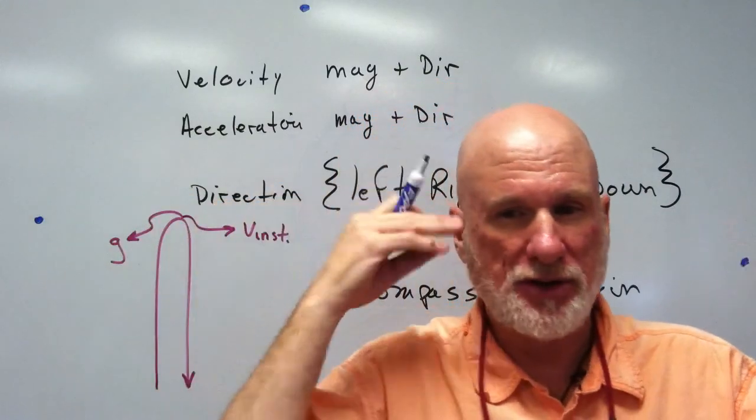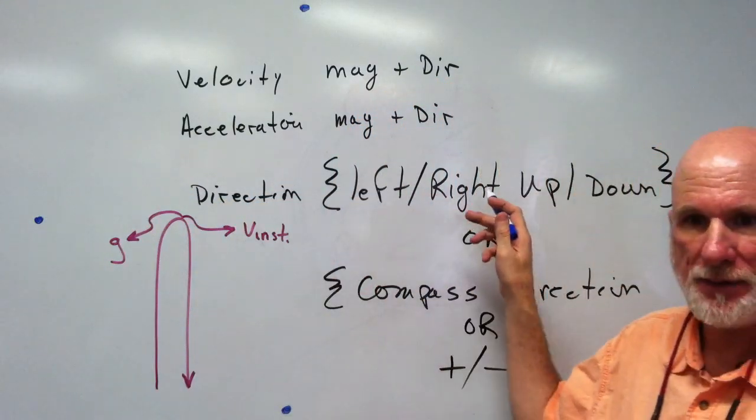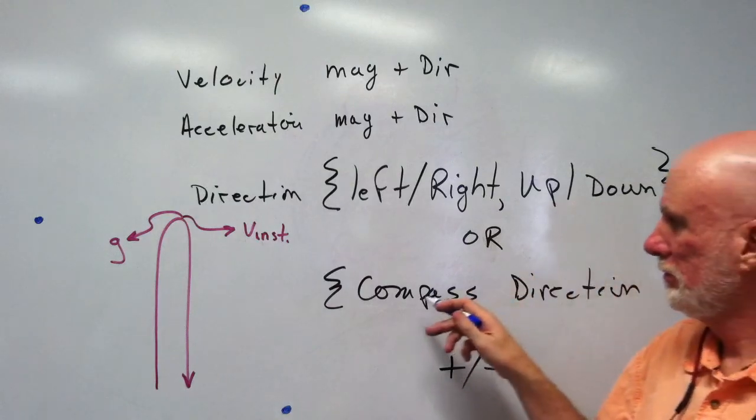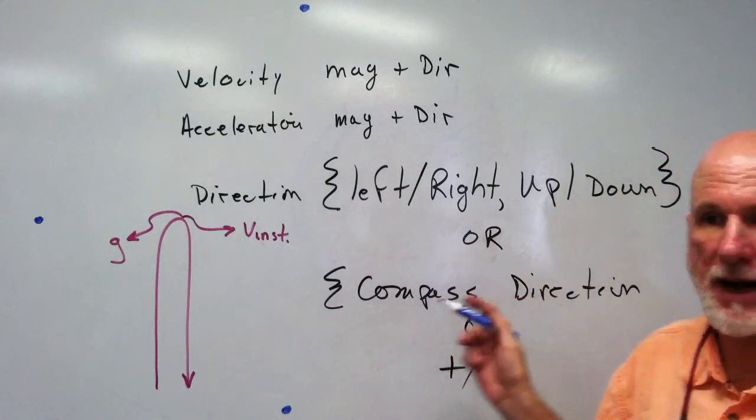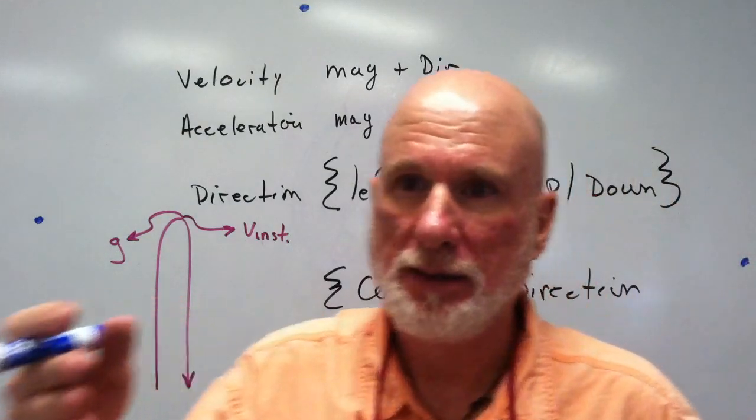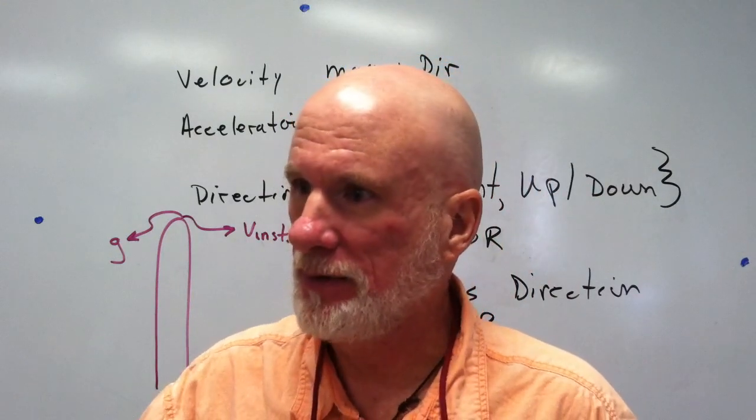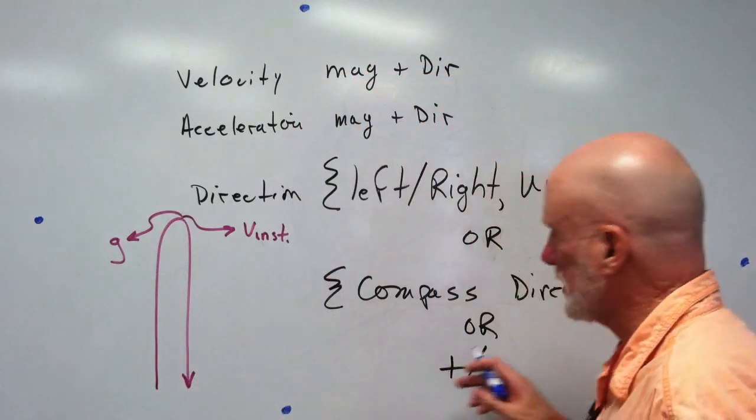Now the direction can be left or right, up and down, or a compass direction - 30 degrees north of east, or it can be plus minus.